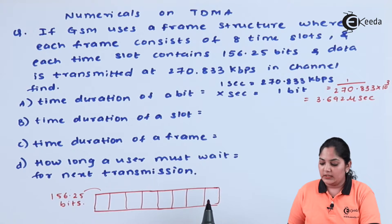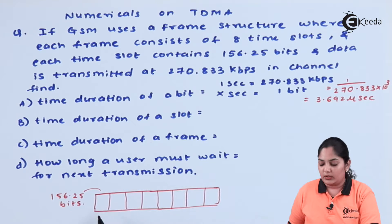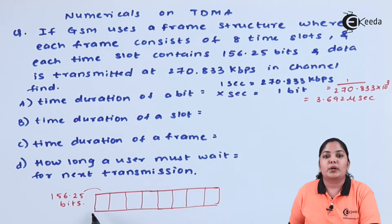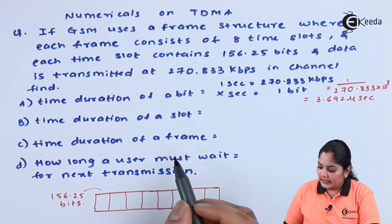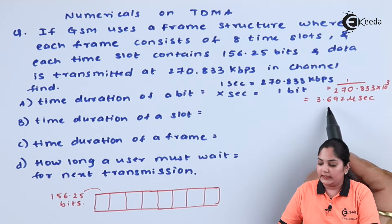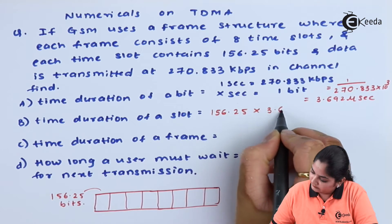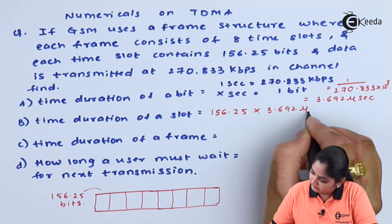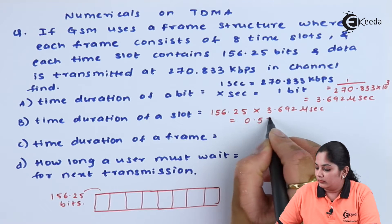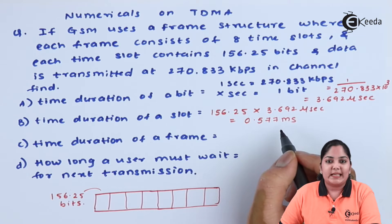The next question asks for the time duration of a single slot. The TDMA frame structure shows 8 slots, each having 156.25 bits. The time duration of one slot is the number of bits multiplied by the time taken by a single bit — 3.692 microseconds. The answer is 0.577 milliseconds per time slot.